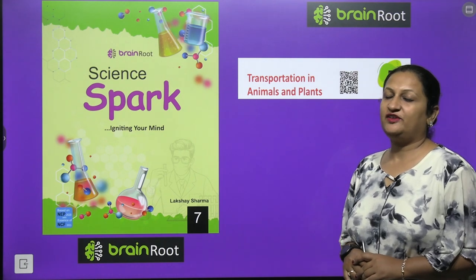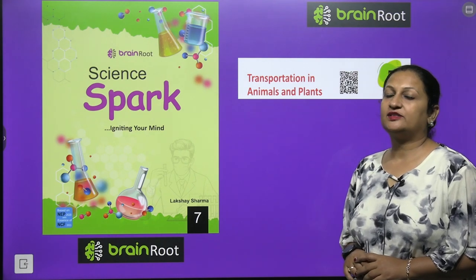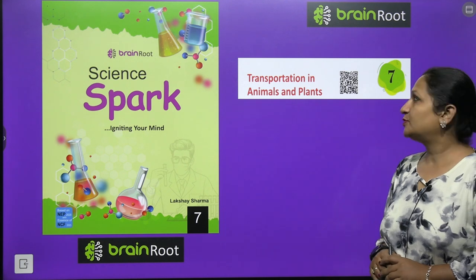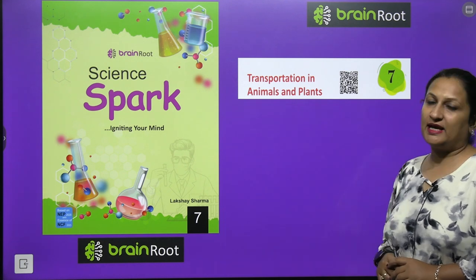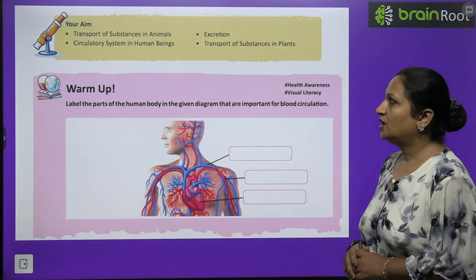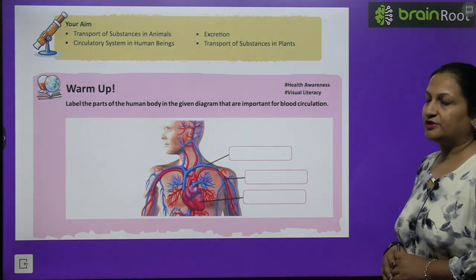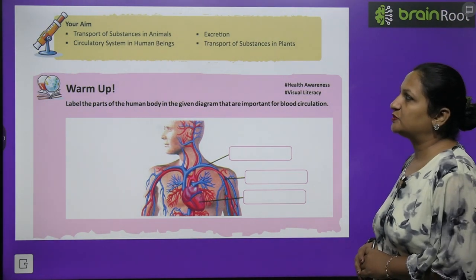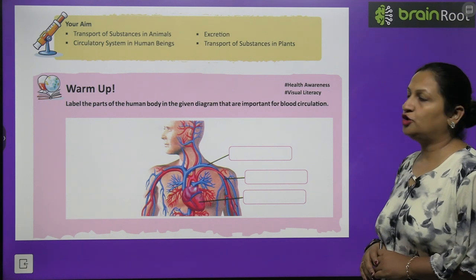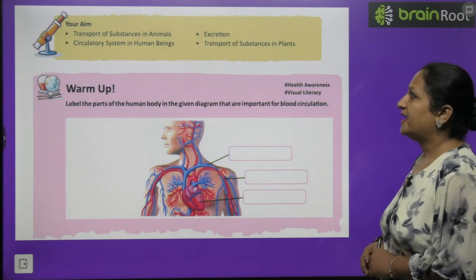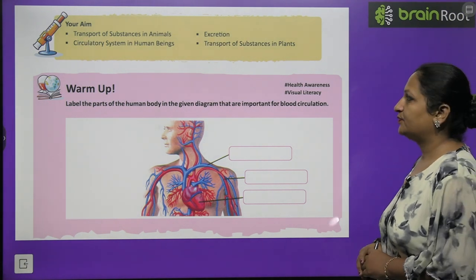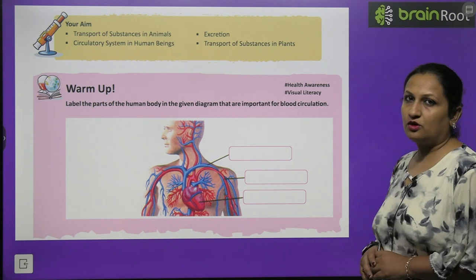Hello, dear children. Today we are going to start with Class 7 Science Chapter 7, that is Transportation in Animals and Plants. In this chapter, your main aims will be transport of substances in animals, circulatory system in human beings, excretion, and transport of substances in plants.